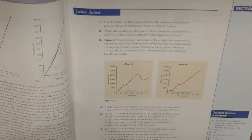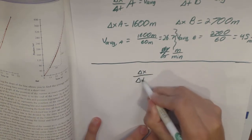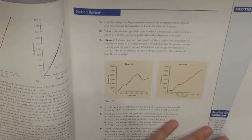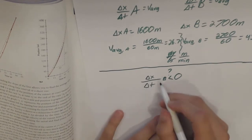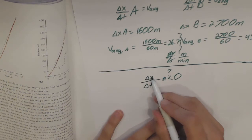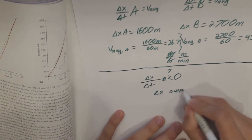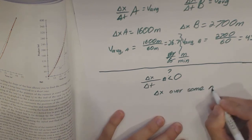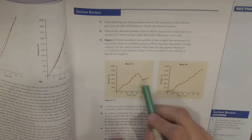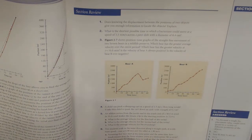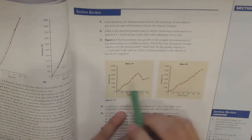The next part asks: is the velocity of bear A always positive? Going back to our definition — velocity is change in distance over change in time. The change in time can never be negative; you can't go backwards in time. So for velocity to be less than zero, the change in position has to be negative. We need to find an area on the graph where delta X over some time interval delta T is less than zero, and that happens right about here — he's going backwards in position.